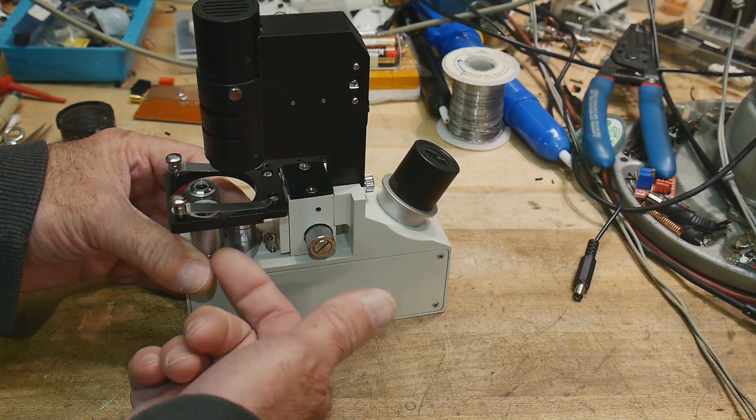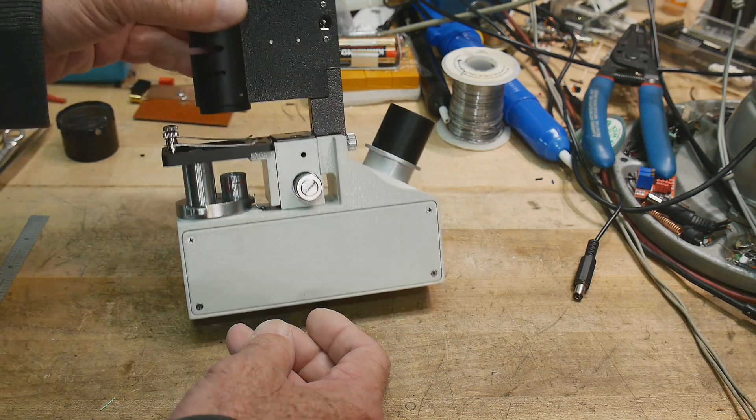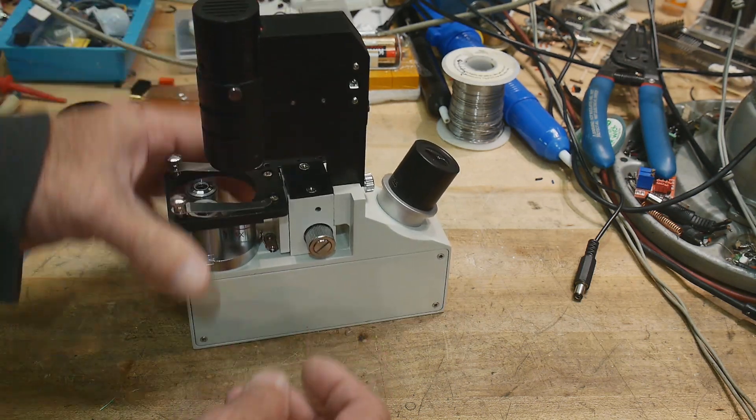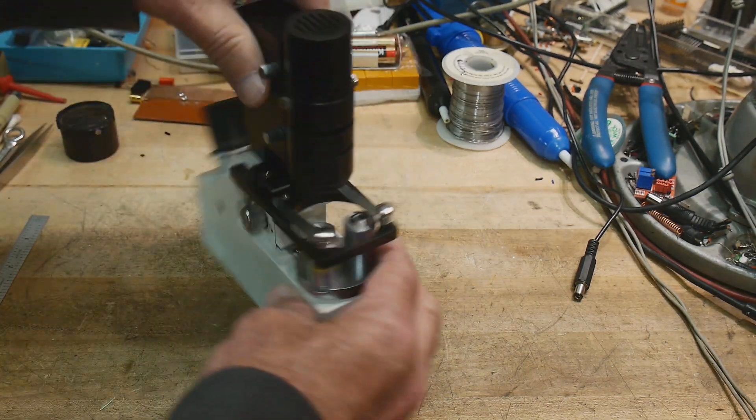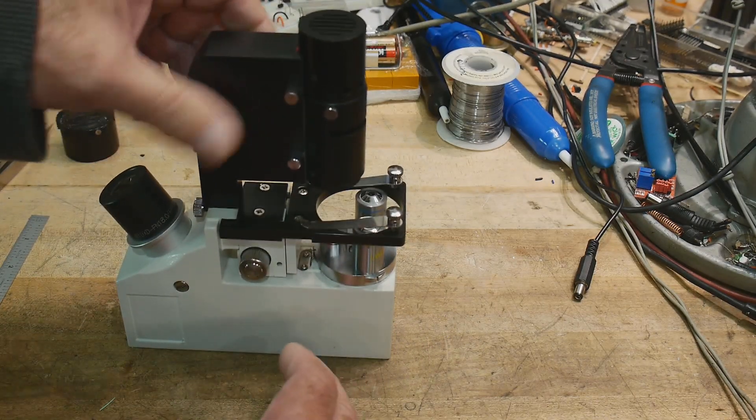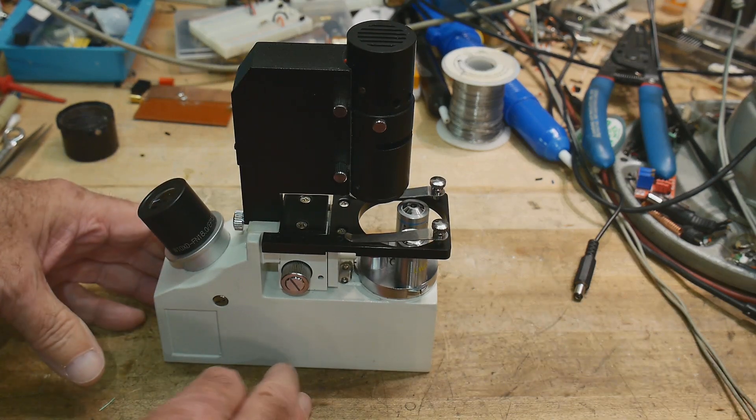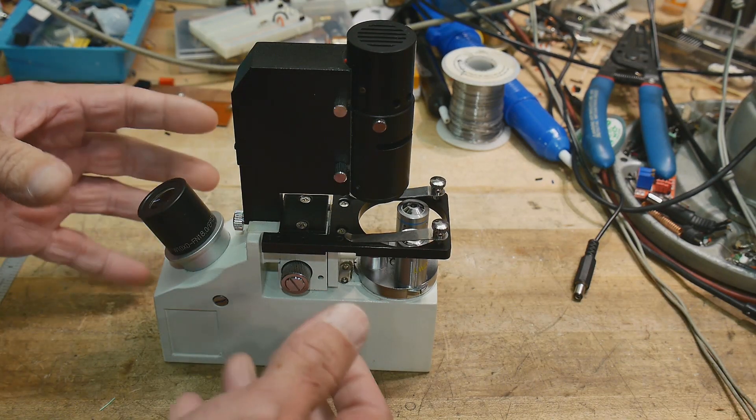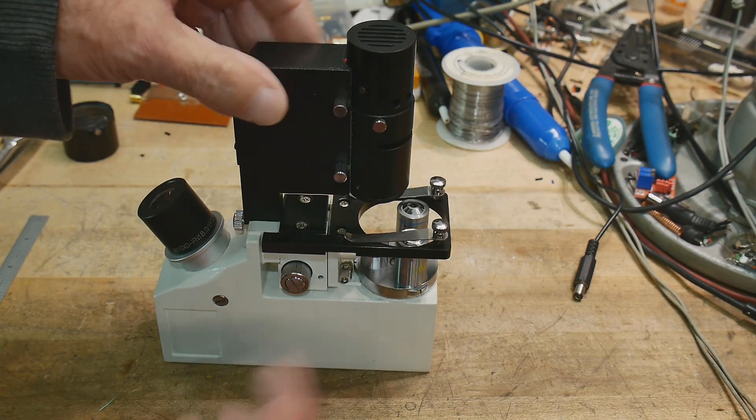You get a 10 power eyepiece, so you get 40x, 100x, and 400x magnification. I don't have any microscope slides right now—I thought I had some but I couldn't find them—so I've ordered some microscope slides.